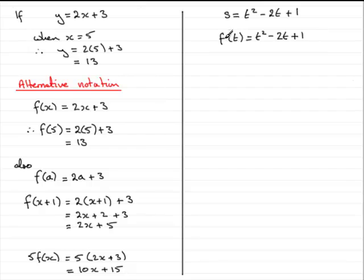But you don't have to stick with f, although that is a common letter that we tend to use. You'll quite often come across other letters like g's or h's and maybe some other ones. g's quite a common one. So, let's just change this to g of t equals t squared minus 2t plus 1.